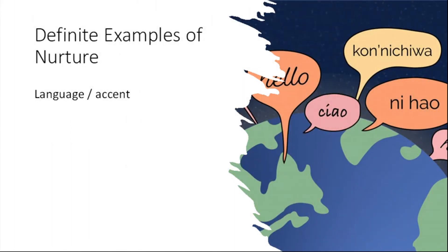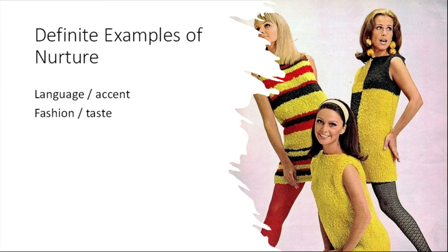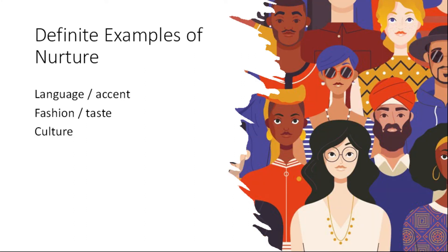There are some good examples of nurture. Language would be the best one — people all over the world speak different languages. Everybody is born with the ability to learn a language, but nobody is born with a language inside them. We can also see clearly with fashion and taste that this is nurture. Looking at fashions from the 1960s, they look quaint today, but at the time those fashions felt extremely attractive and sophisticated to people — clearly an example of behaviour influenced by our social situation. More broadly, the issues of culture covered in past lectures would seem to come from nurture.